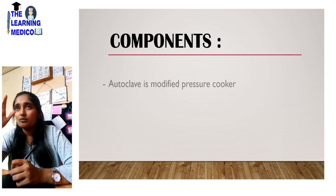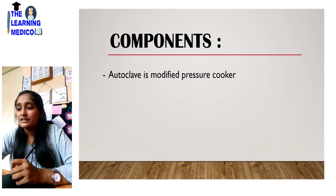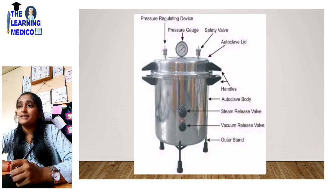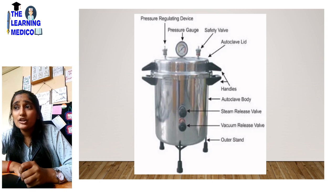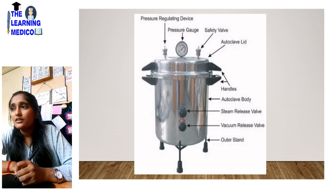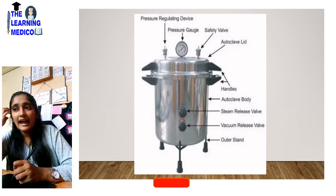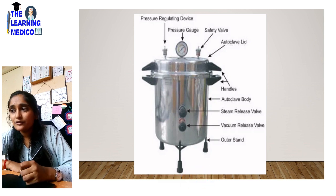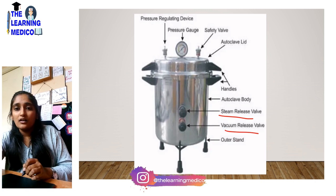Now, the components. An autoclave is a modified pressure cooker — very similar to one. It consists of a vertical and horizontal cylinder of gun metal. It has a pressure gauge to show the pressure inside, and a pressure regulating device. If pressure increases, there is a safety valve. There is an autoclave lid that makes it airtight, a handle, the autoclave body, a steam release valve, a vacuum release valve, and an outer jacket.